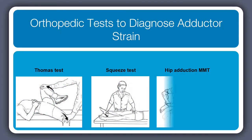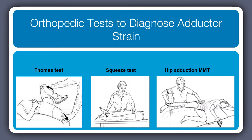Usually the history is what's used to diagnose this — you did some activity and now you have groin pain. That's usually all we need to know that it's a groin strain and how to treat it effectively. But to verify that, we'll do the Thomas test, the squeeze test, and the hip adduction manual muscle test to get some additional information.